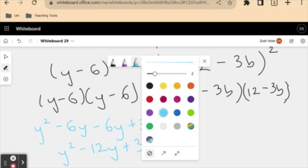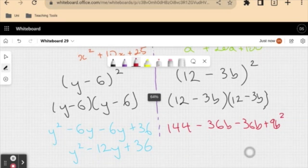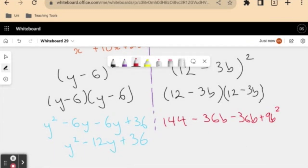Now once again, I have two like terms, which I can simplify to y squared minus 12y plus 36. Okay, that's cool. Let's try this on the right hand side and see what we get. So 12 multiplied by 12, we get 144. 12 multiplied by minus 3b gives me minus 36b. Negative 3b multiplied by 12 gives me negative 36b again. And negative 3b multiplied by negative 3b will give me 9b squared. Simplifying this one more time, we get 144 minus 72b plus 9b squared.